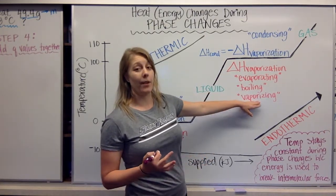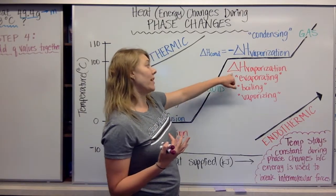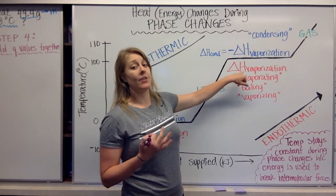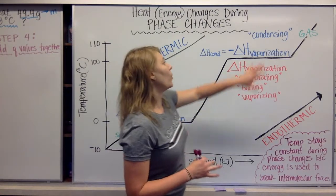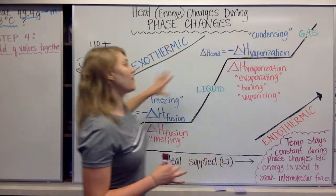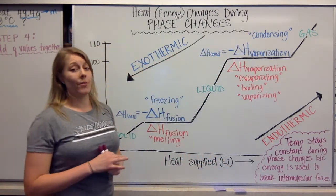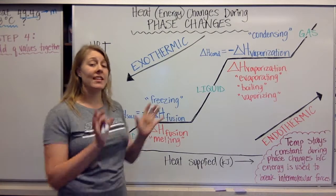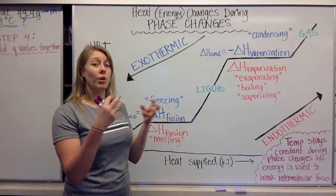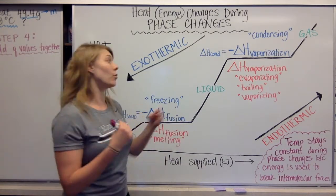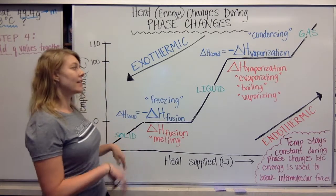When you're going from water to steam, that's what we know as boiling, evaporating, or vaporizing. In chemistry we refer to this change as the delta H of vaporization. When you're moving down the graph, all of this in blue is exothermic because it's having to give off heat energy in order to cool down and go from steam to water to ice.